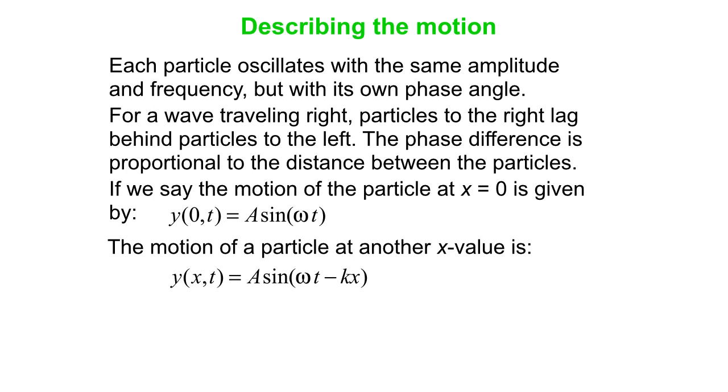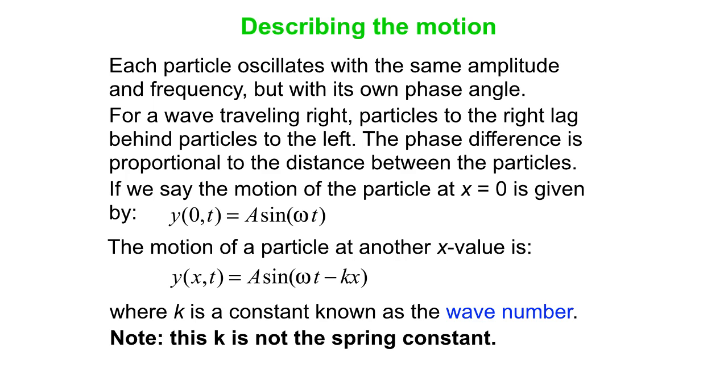the phase angle is negative because that particle is delayed compared to the one at the origin, and proportional to the distance from the origin, proportional to x. This thing k is known as the wave number, not to be confused with the spring constant. And this one equation, y(x,t) = A sin(ωt - kx), describes the whole wave. It's the one equation for the whole darn thing.